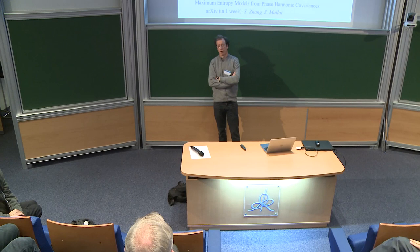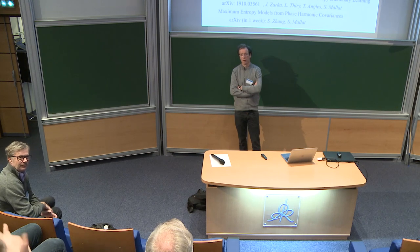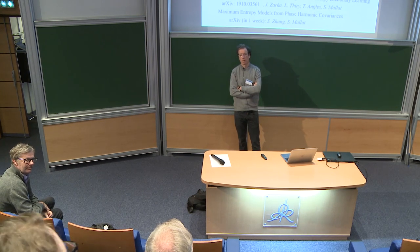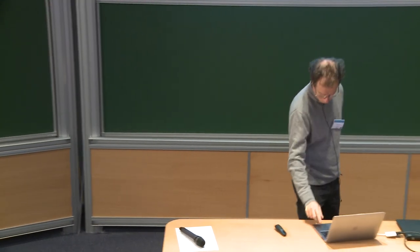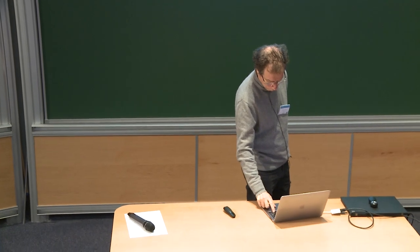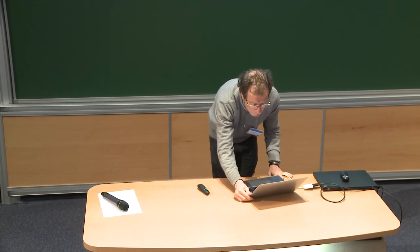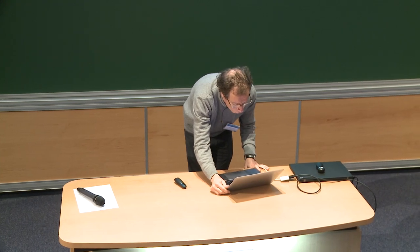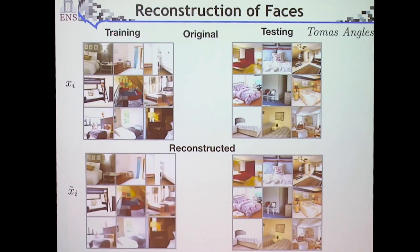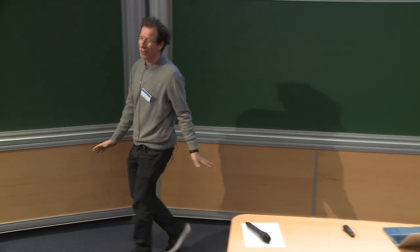Q: When you showed the reconstructed images between training and testing sets, it seemed the test reconstructed images were much closer to the original than the training ones. Why? A: That means I inverted the two columns—normally it's the contrary. You are right, and it shows I inverted the two columns. There is no miracle—there is no way you can do better on training data than test data.